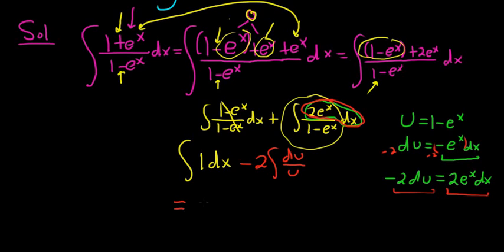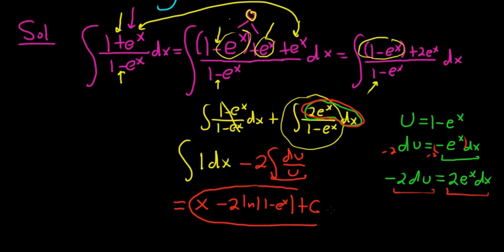Integrating the first integral we get x. Then −2 times the second integral gives us a natural log: −2 ln|u|. Since u = 1 − eˣ, the final answer is x − 2 ln|1 − eˣ| + C. This problem is from one of the MIT Integration Bee qualifying exams — a fun problem to keep your integration skills in good shape.